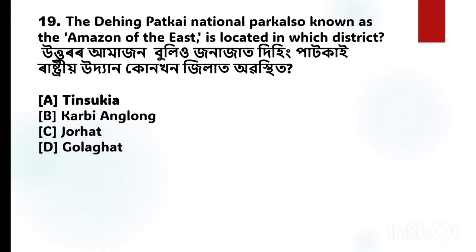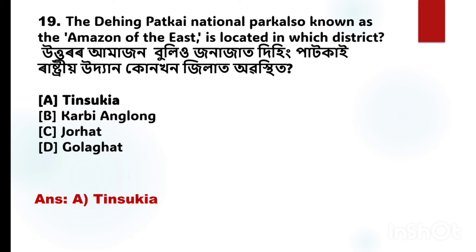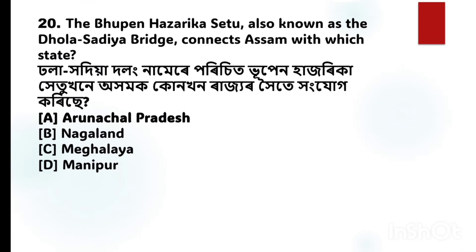Next question number 19: The Dihing Patkai National Park, also known as the Amazon of the East, is located in which district? The correct answer is Option A: 35.10% — the question refers to its district location.